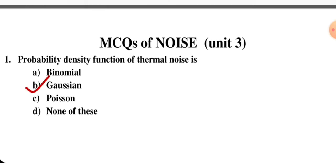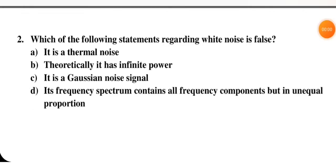For thermal noise, the PDF is a Gaussian function. Next question: which of the following statements regarding white noise is false? It is a thermal noise; theoretically it has infinite power; it is a Gaussian noise signal; or its frequency spectrum contains all frequency components but in unequal proportion. The first three are correct. The false statement is 'in unequal proportion' — if it said equal proportion, it would be true. So D is the correct option.